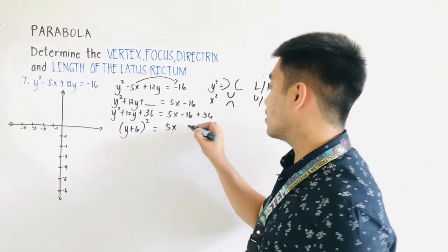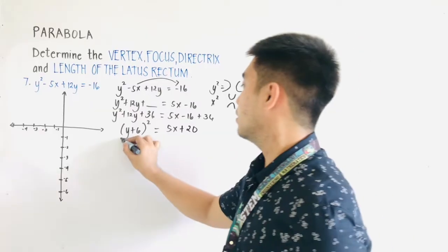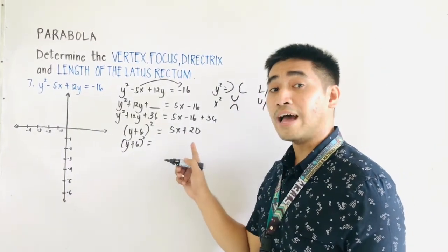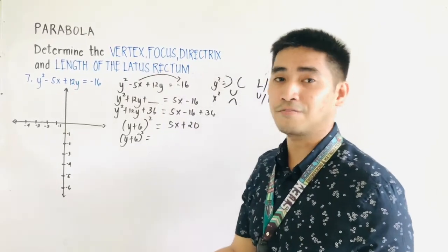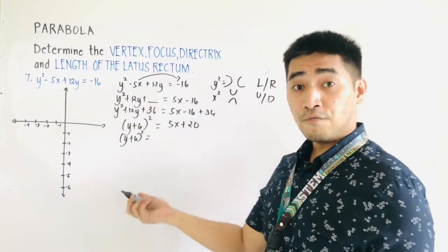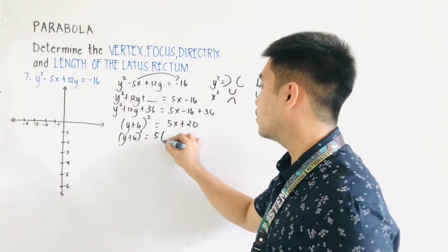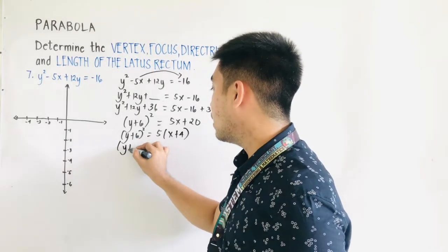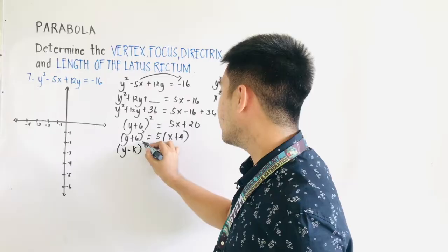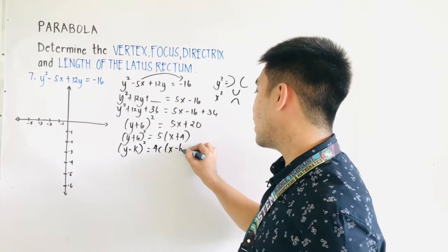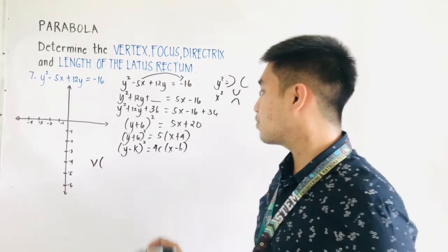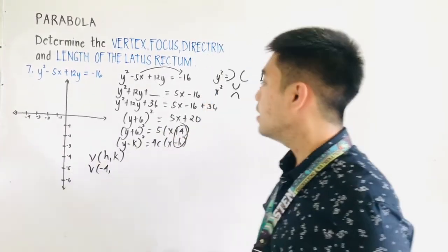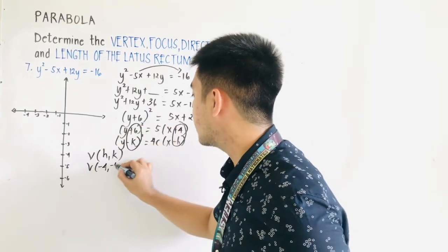−16 + 36 gives us positive 20. So (y + 6)² = 5x + 20. We factor out the coefficient of x to put this into standard parabola form. The coefficient of x is 5, so we factor to get (y + 6)² = 5(x + 4). This takes the form (y − k)² = 4c(x − h), where the vertex is at (h, k). Therefore, h = −4 and k = −6, so the vertex is at (−4, −6).